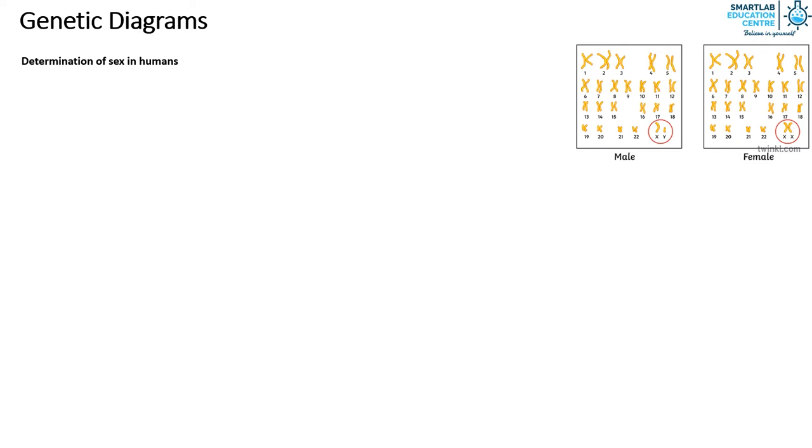In males the sex chromosome is made up of X and Y. In females the sex chromosomes are both made up of X chromosomes. The Y chromosome is identified as the shorter one.